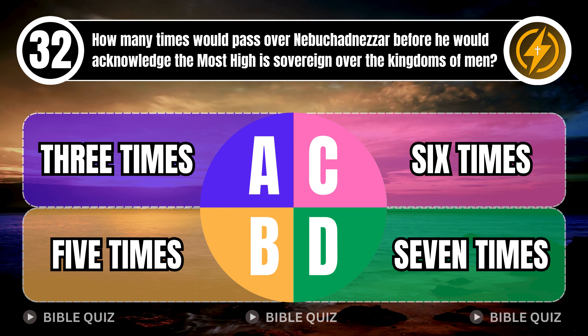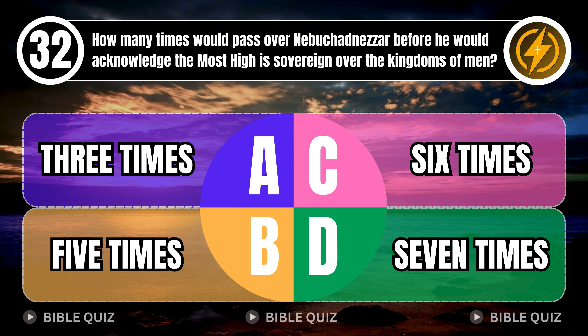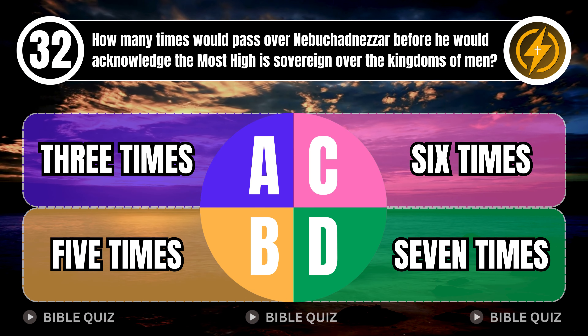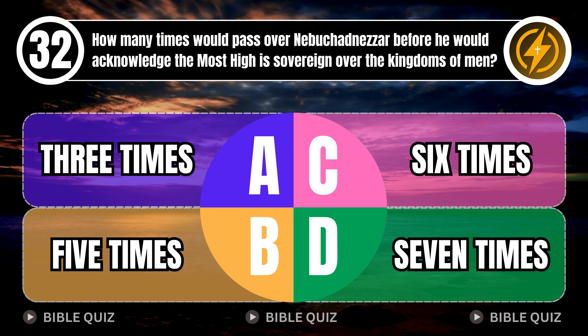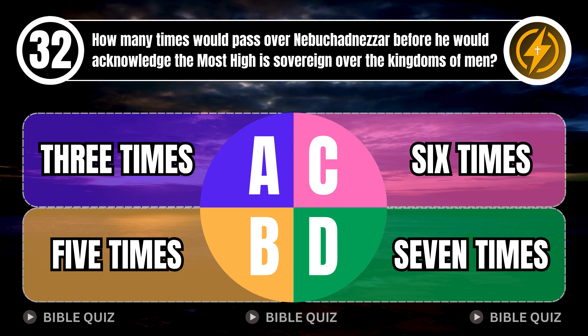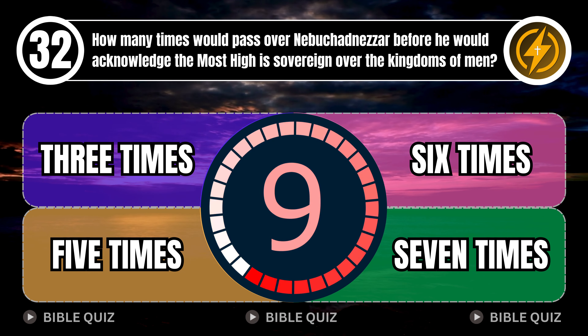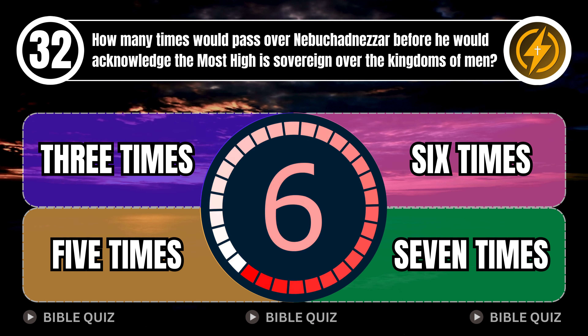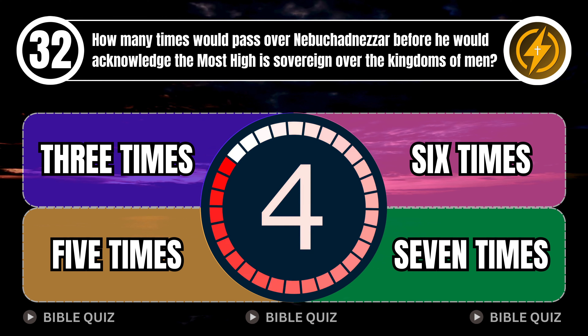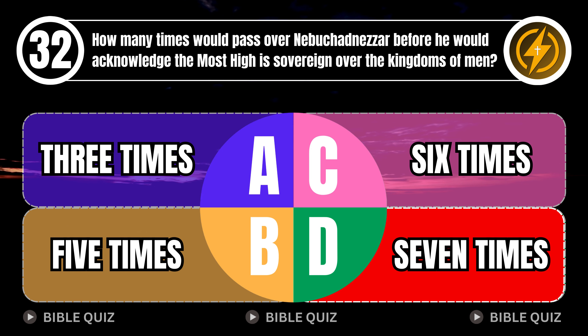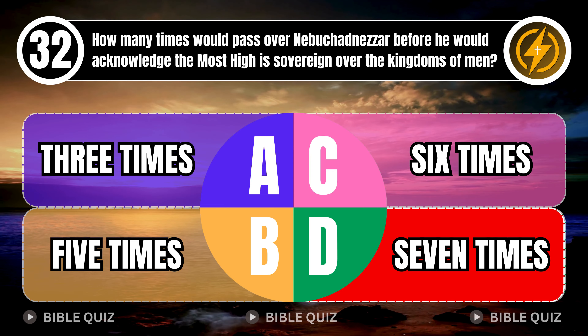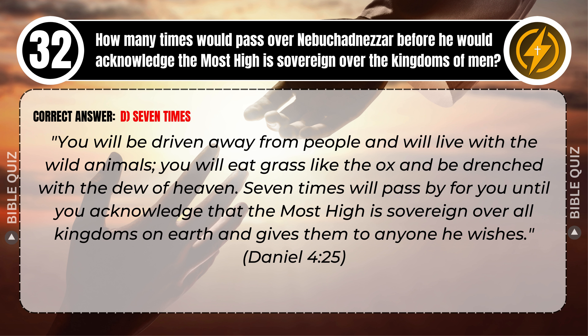Question 32: How many times would pass over Nebuchadnezzar before he would acknowledge the Most High as sovereign over the kingdoms of men? A. Three times. B. Five times. C. Six times. D. Seven times. Correct answer: D. Seven times. You will be driven away from people and will live with the wild animals; you will eat grass like the ox. Seven times will pass by for you until you acknowledge that the Most High is sovereign over all kingdoms on earth. Daniel 4 verse 25.